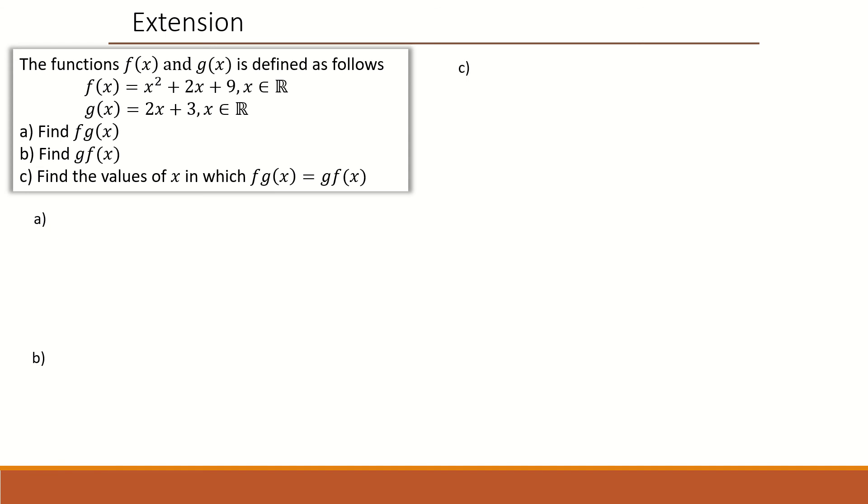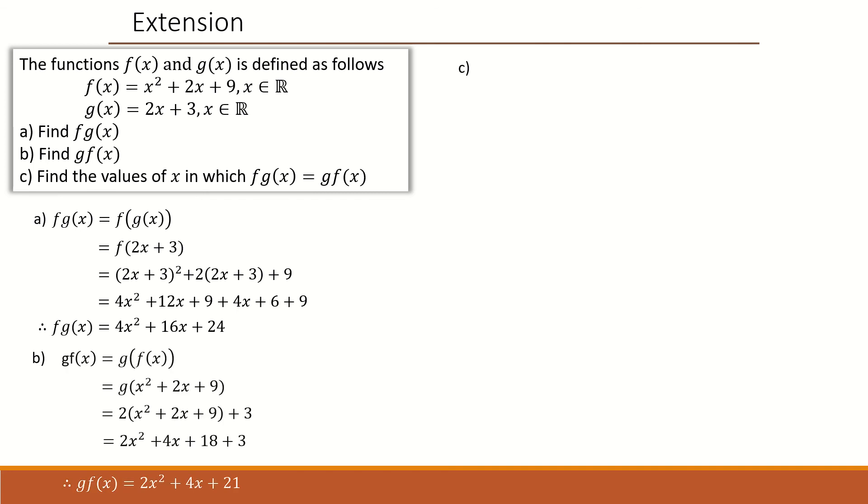So for part a, f and g are shown. So for part a, find fg of x is a composite function, where fg of x is the same as the f in brackets g of x, where the input is 2x plus 3. Put that into the function f of x to give you 2x plus 3 squared, plus 2 times 2x plus 3 plus 9. Expand and simplify to give you 4x squared plus 16x plus 24.